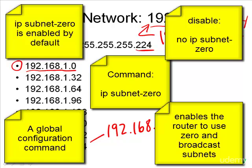When dealing with subnetting questions, the safe assumption is that we are using the IP subnet zero command — in other words, we can use these two subnets. However, keep in mind that if for some reason this is disabled, you'll need to rethink which subnets are available. Likewise, if you're dealing with routing protocols that do not support IP classless networks, take that into consideration too. That is the zero subnet and the broadcast subnet. Thanks for watching.